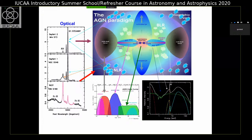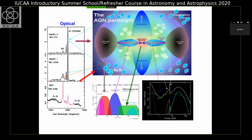Going to larger scales, there are structures called the cold and dusty torus. The emission from the accretion disk gets absorbed and reprocessed into the infrared. We therefore see an infrared bump — this is the reprocessed emission from the dust torus. Near the central engine and the accretion disk, there are clouds of material. These clouds get ionized by the emission from the accretion disk, and ionization followed by recombination leads to emission lines.